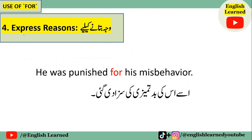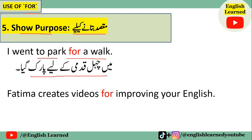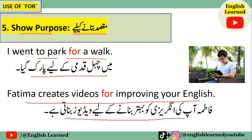Fourth case jismein hum 'for' ka istamal kar sakte hain woh hai expressing reasons — yani ke wajah bataane ke liye. Example: 'He was punished for his misbehavior' — use uski badtameezi ki saza di gayi. Fifth and last case for utilizing 'for' in any sentence is showing purpose — yani ke maqsad bataane ke liye. 'I went to park for a walk' — main chahl qadmi ke liye park gaya. 'Fatima creates videos for improving your English' — Fatima aapki English ko behthar banaane ke liye videos banaati hai.